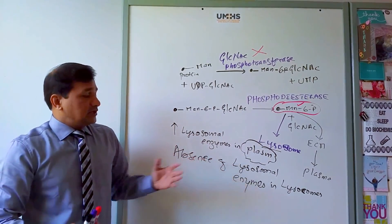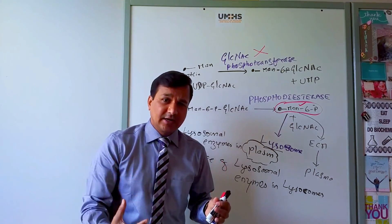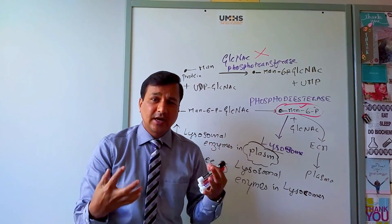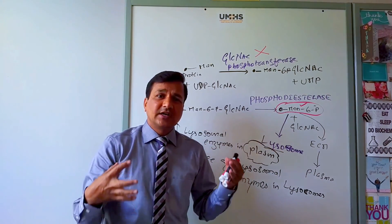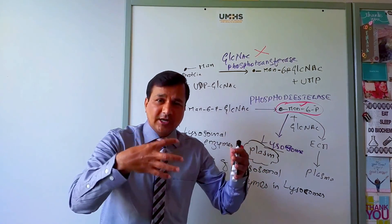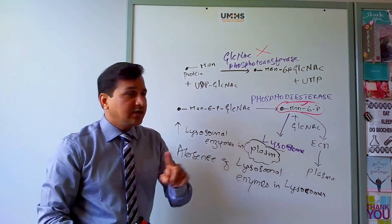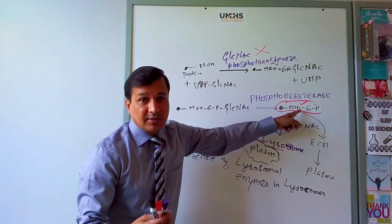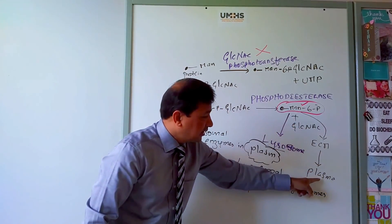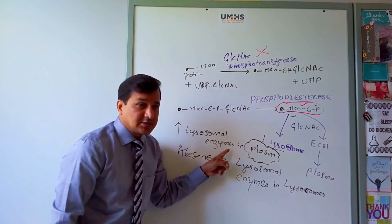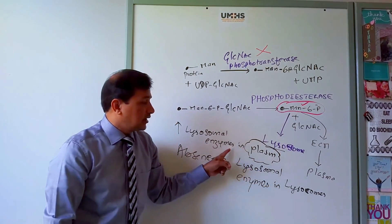Since you don't have lysosomal enzymes in the lysosome, consider the normal function of the lysosome: it is meant to degrade glycogen, proteins, lipids, and nucleic acids. All the things that need to be degraded are dumped into lysosomes, and all these acid-stable lysosomal enzymes need to get there by having mannose 6-phosphate as their chemical marker. If mannose 6-phosphate is not added onto these proteins, they all by default reach the plasma, so their levels are increased in plasma rather than in the lysosomes.